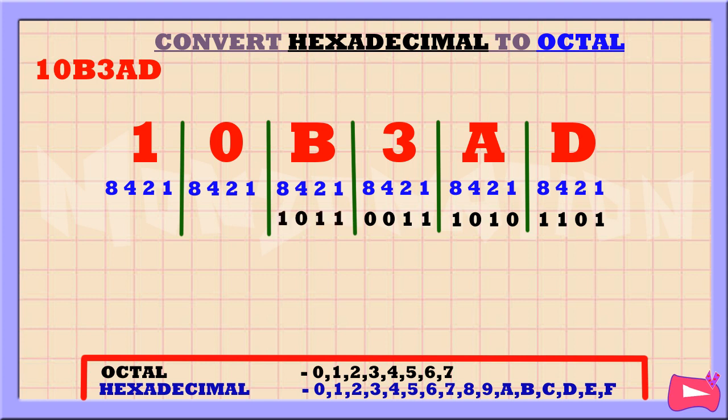B is the sum of 8, 2, and 1, so we're going to replace 8, 2, and 1 with 1. We didn't use 4, so let's replace it with a 0.